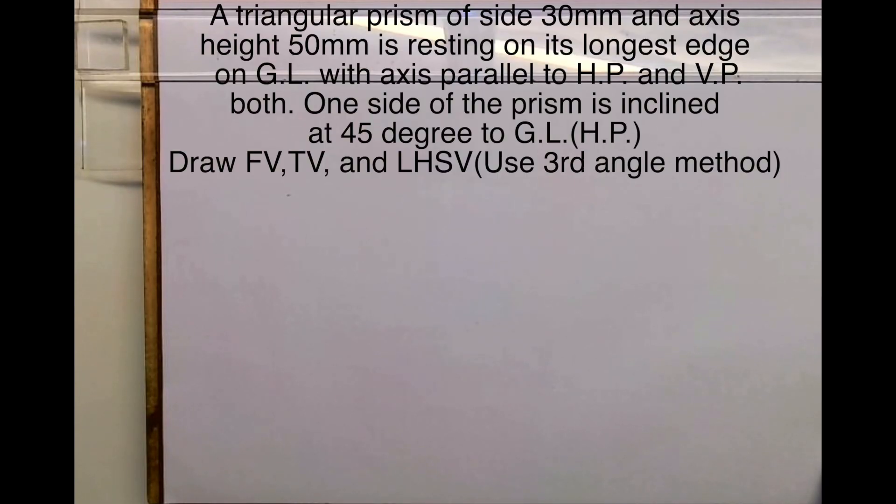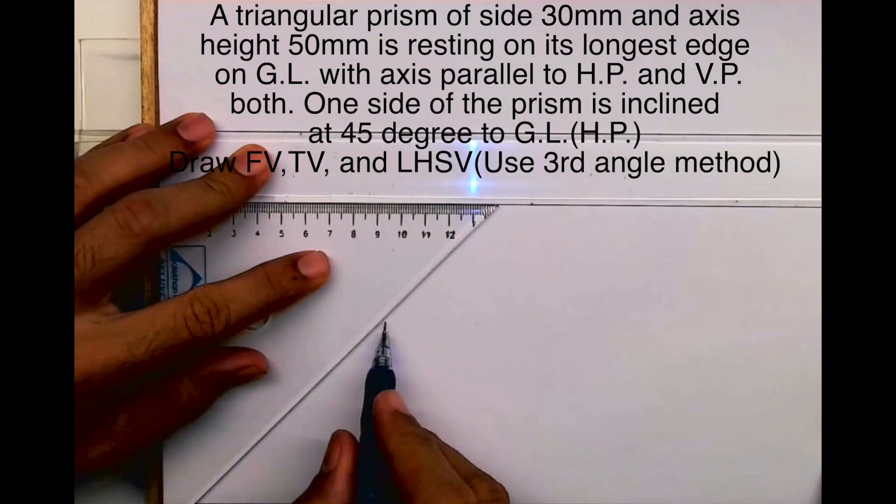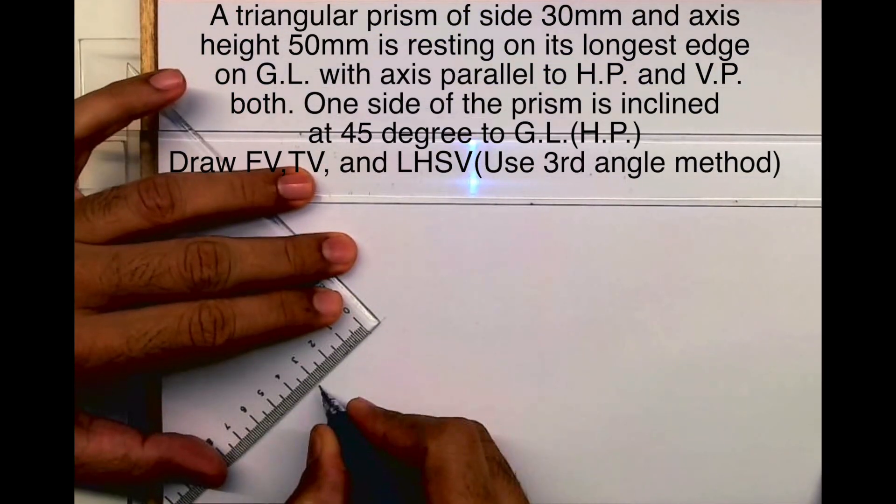Welcome to technical drawing. Today we'll see how to draw a triangular prism of side 30mm and axis height 50mm. It is resting on its longest edge on GL with axis parallel to HP and VP both. One side is inclined at 45 degrees to GL or HP. So we have to draw this in third angle.